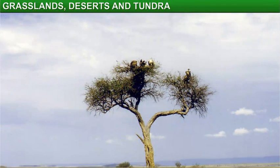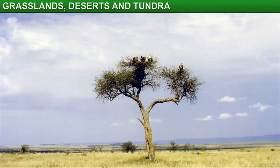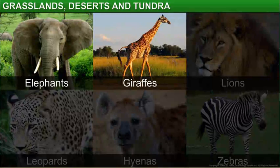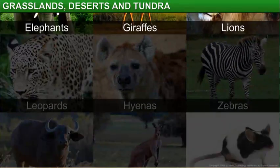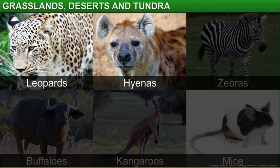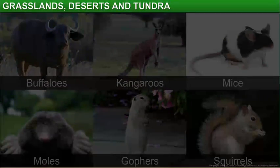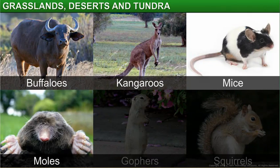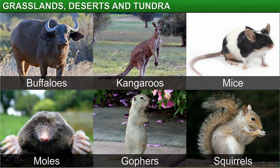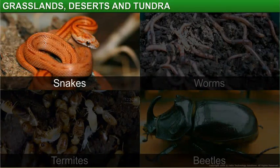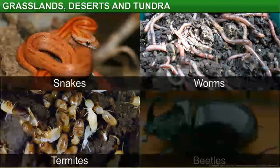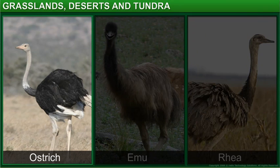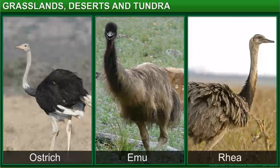Some isolated trees and shrubs can be found growing in areas where there is groundwater. Large animals such as elephants, giraffes, lions, leopards, hyenas, zebras, buffaloes, and kangaroos, to small animals like mice, moles, gophers, ground squirrels, snakes, worms, termites, and beetles are common in tropical grasslands. Birds like ostrich, emu, and rhea live here too.